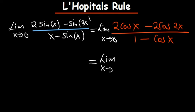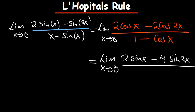We can continue differentiating as many times as needed until we get the answer. The derivative of cosine is negative sine, so we get: two sine of x minus — and the derivative of what's in the brackets is two, so two times two gives us four sine of 2x on the top. On the bottom, the derivative of cosine is negative sine.